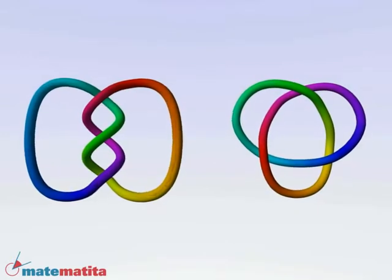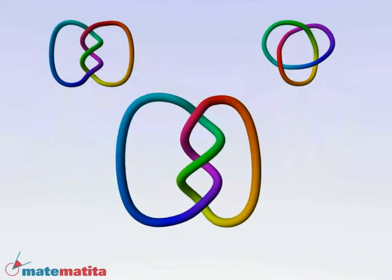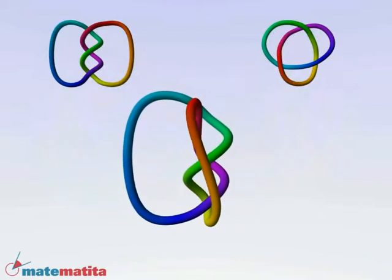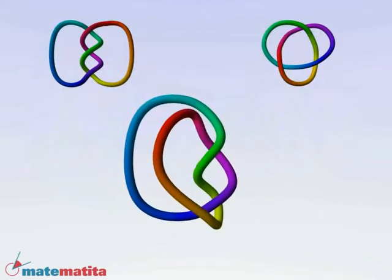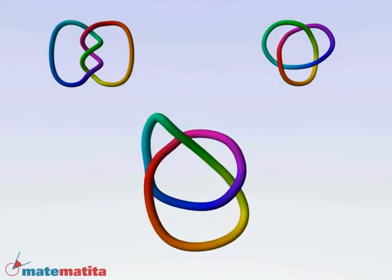These two knots look different too, but they are tied in the same manner, in some sense. They have different shapes but represent the same knot. One can be deformed into the other without ever cutting the strings.